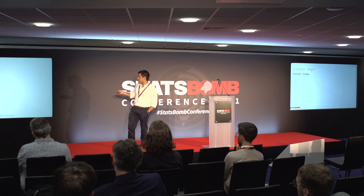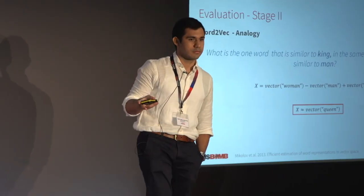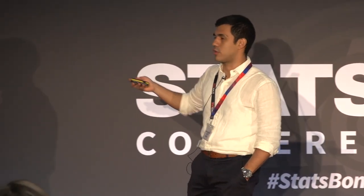Now I want to try another stage of evaluation: I want to see if my embeddings are capturing analogies. Let me explain what analogy means in this context. This idea is again from Word2Vec, where you ask the embeddings: 'What is the one word that is similar to king in the same sense as woman is similar to man?' This question is translated into a vector operation, and the most similar result turns out to be the vector representing the word 'queen.' It's impressive — and I want to ask similar questions to my football model.